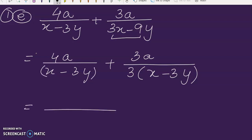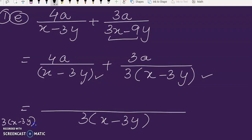Now we take its LCM. 3 comes here, then x minus 3y is common in both of the fractions, so it comes in the LCM. Now we divide the LCM by this, so we multiply this thing and we get 3.